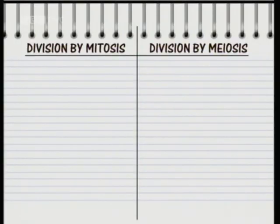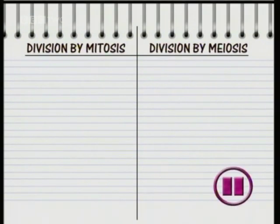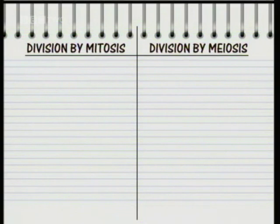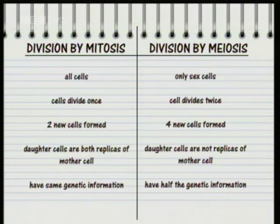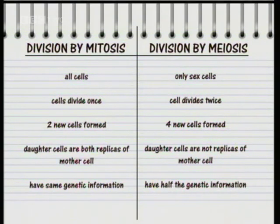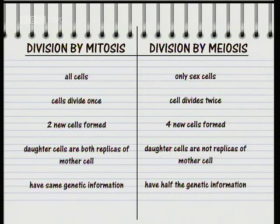It's important to know the differences between mitosis and meiosis. Mitosis cell division happens to all cells, while meiosis only happens to sex cells. In mitosis, the cell divides once to create two new daughter cells, which are both exact replicas of the mother cell and have the same genetic information. In meiosis, the cell divides twice to create four new daughter cells, which are not exact replicas of the mother cell and have only half the genetic information.